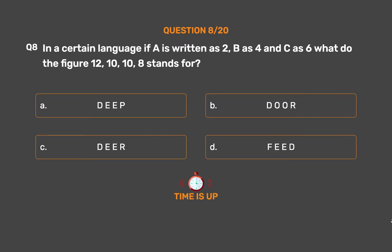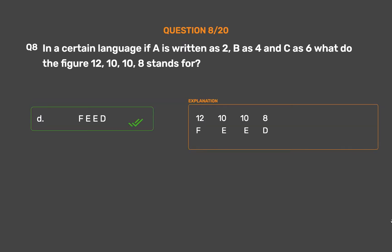The correct answer is Option D: FED. Each letter is multiplied by 2: F=6×2=12, E=5×2=10, D=4×2=8. So 12, 10, 8 stands for FED.